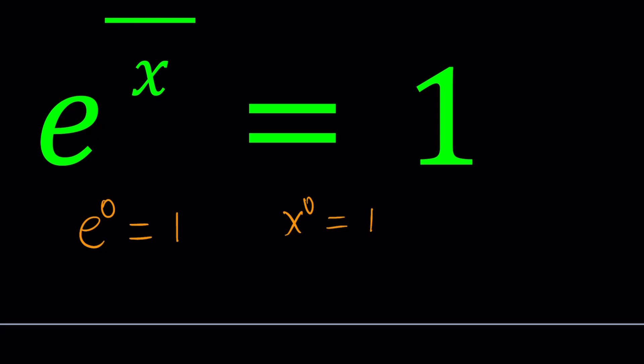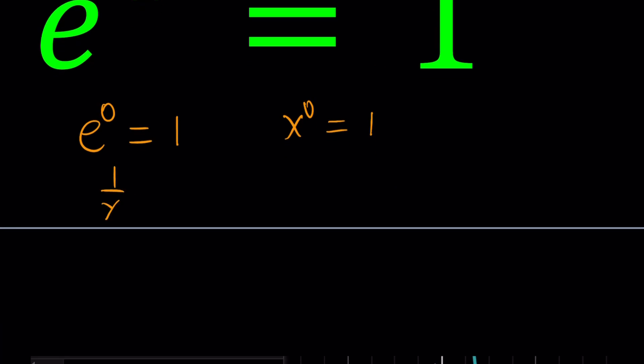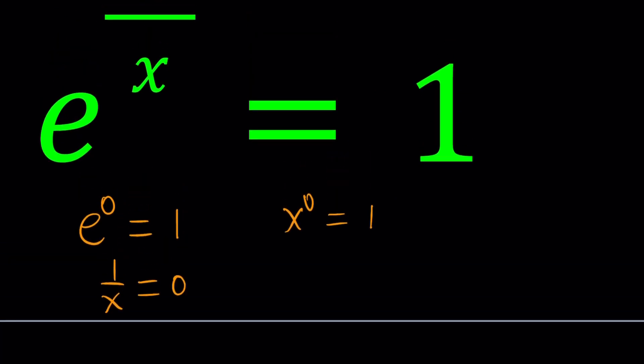But e^0 equals 1, so does that mean 1/x equals 0? But that equation actually doesn't have a solution. Well, what if x is infinity, but infinity is not a number? Well, we can kind of think about it this way, can't we?